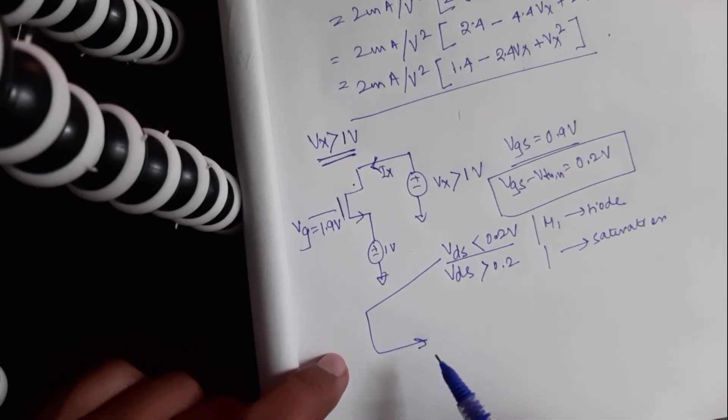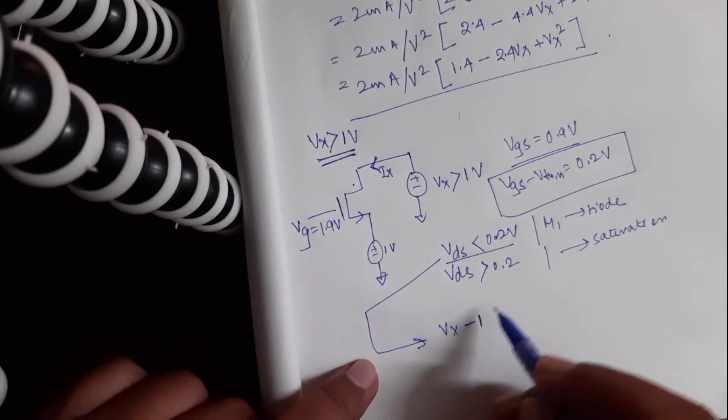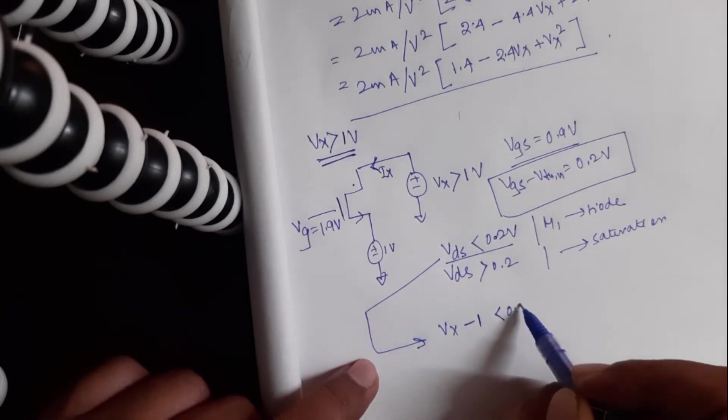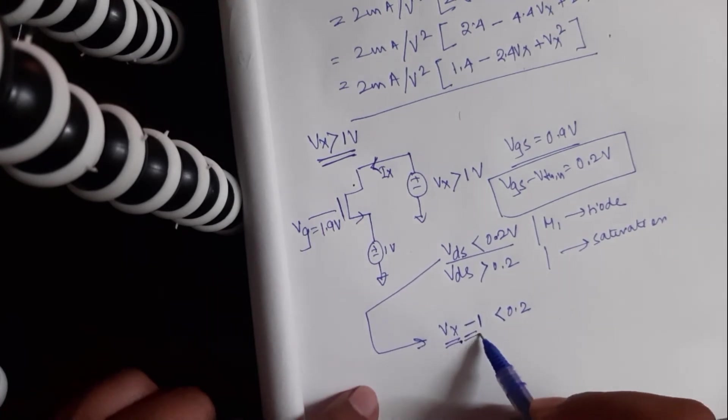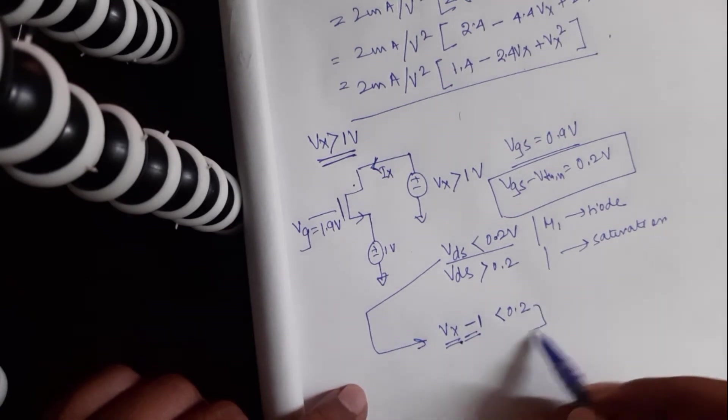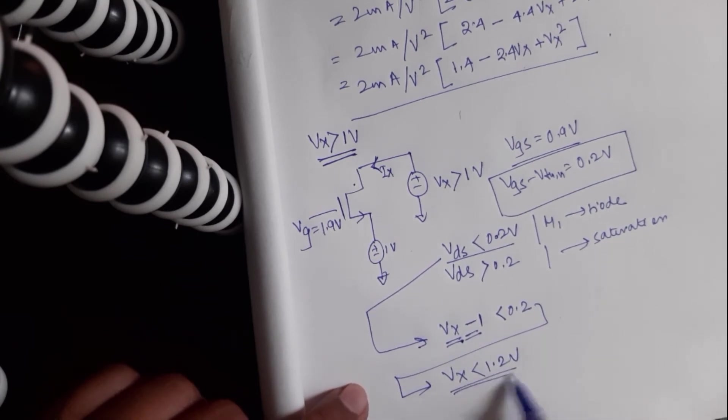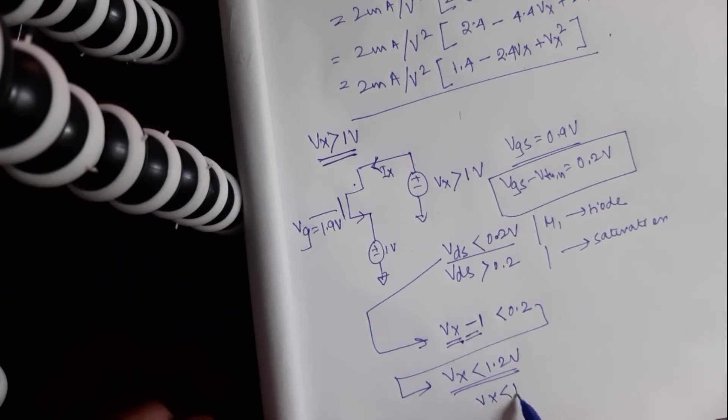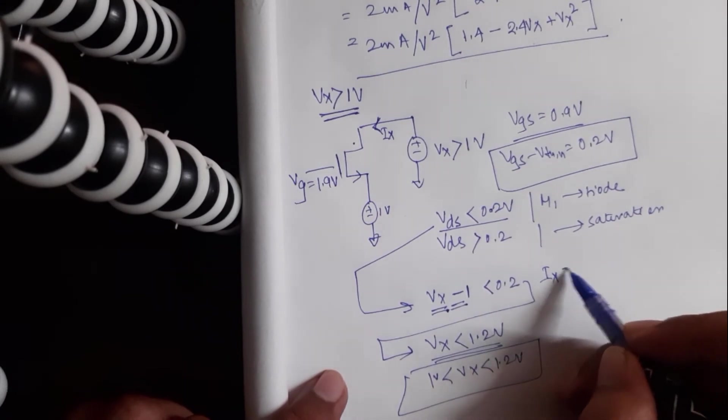So let us consider the triode case. Vds is Vx minus 1 in this case. Vx minus 1, if it is less than 0.2 volts. Here we are considering Vx is greater than 1. So this is a positive quantity. So, Vx less than 1.2 volts. That means in absolute terms, when Vx is between 1.2 and 1 volts, this transistor is in triode region.